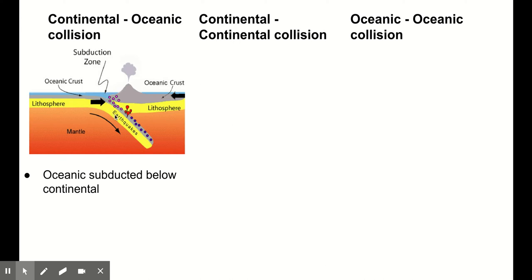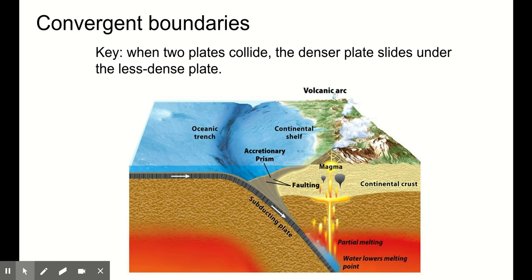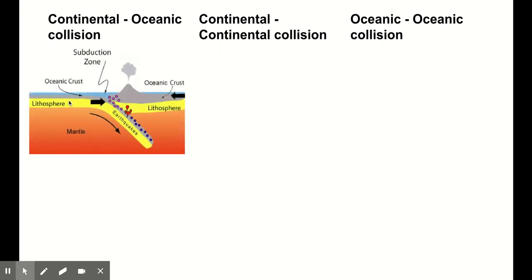What I want you to notice about the subduction zone is that at the point of collision, there's a giant trench created — that's literally the physical boundary between the two plates. This is where our deepest ocean trenches are formed. When our oceanic crust gets subducted below our continental crust, it gets really hot because it's being forced closer to the center of the earth. Eventually it gets so hot that some of this crust melts, and we know hot things rise.